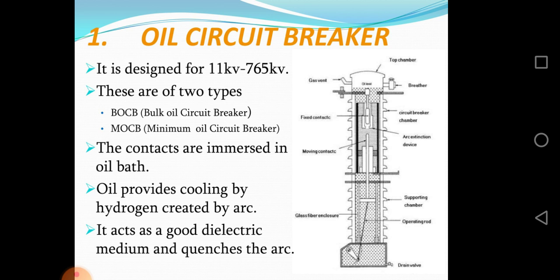Parts of the oil circuit breaker include: drain valve, operating rod, supporting chamber, arc extinction device, circuit breaker chamber, breather, top chamber, gas vent, fixed contact, moving contact, and glass fiber enclosure.